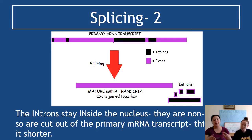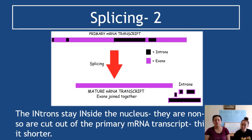The introns stay inside the nucleus — they are non-coding and not going to the ribosome because they are useless. Notice there is a difference in length between the primary and the mature transcript: the mature transcript is shorter because material has been cut out. This is an exam question that comes up regularly — give a difference between the primary and mature transcript: one is shorter because introns have been removed. So introns stay in the nucleus; exons exit the nucleus and do useful things.